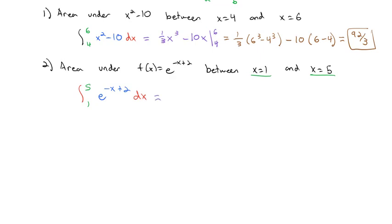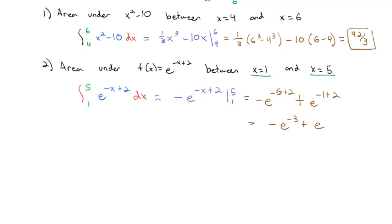The antiderivative of e to the stuff is e to the stuff, and we divide by the derivative of negative x, which is negative 1. Integrating from 1 to 5, we plug those values in: negative e to the negative 5 plus 2, minus a negative, which makes it plus e to the negative 1 plus 2. Simplifying, that becomes negative e to the negative 3 plus e to the first power, giving us the area under our curve between 1 and 5.